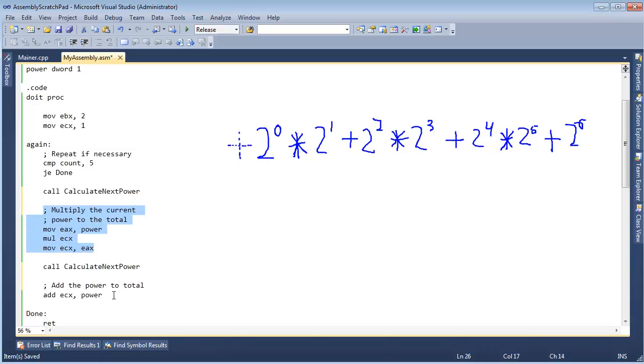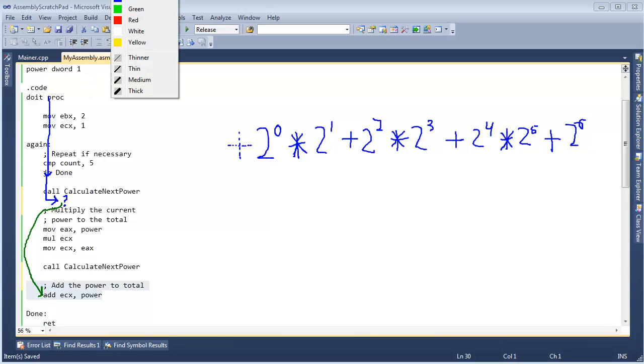We have our multiply, we have our add, and what we want to do here is come into our procedure, do our check on the loop, and then at this point, after we calculate our next power, we have to ask ourselves a question. Are we at an even power or are we at an odd power? If we're at an even power, we want to jump over and do the addition code. But if we're at an odd power, we want to jump and do the multiplication code right there.